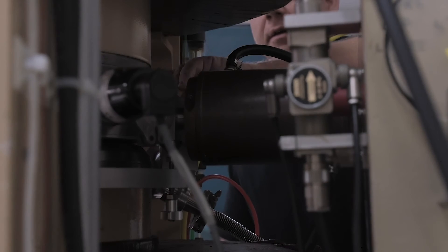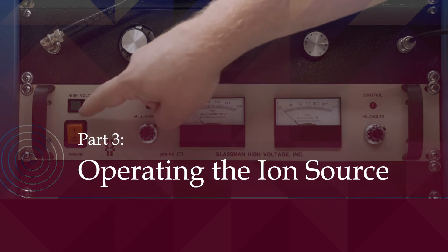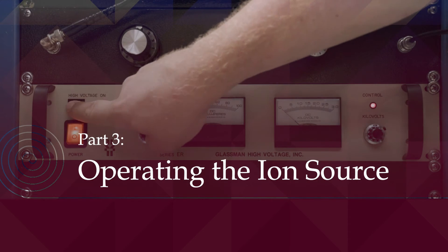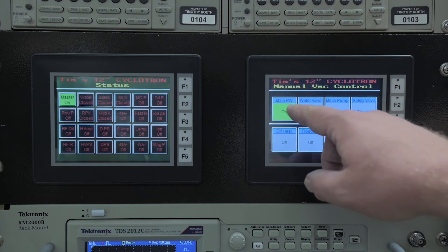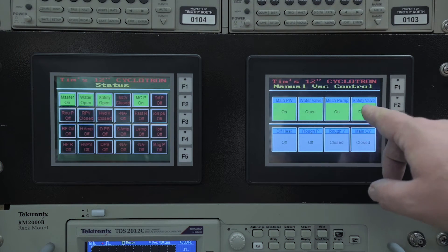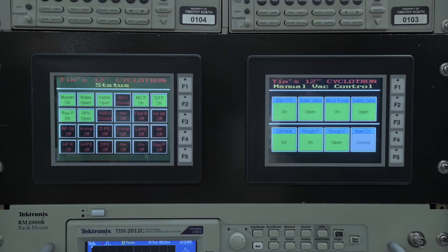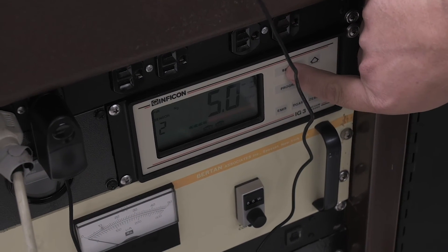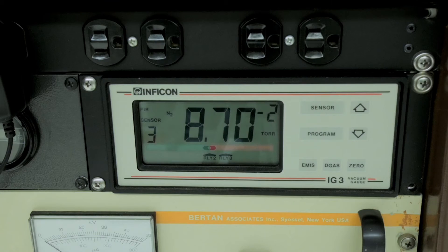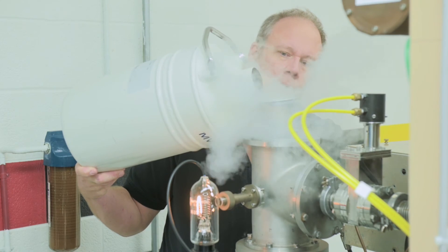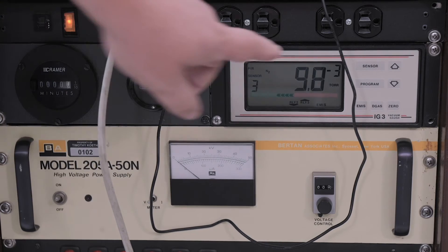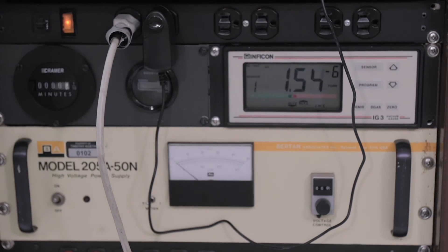Now we are ready to give the ion source a test run. We begin the pump down sequence by roughing the chamber while the diffusion pump heats up. Once the diffusion pump is operating, we valve out the rough pump and valve in the diffusion pump, aiming for an ultimate pressure in the order of 10 to the minus 6 torr range. On a good day, even the high 10 to the minus 7.